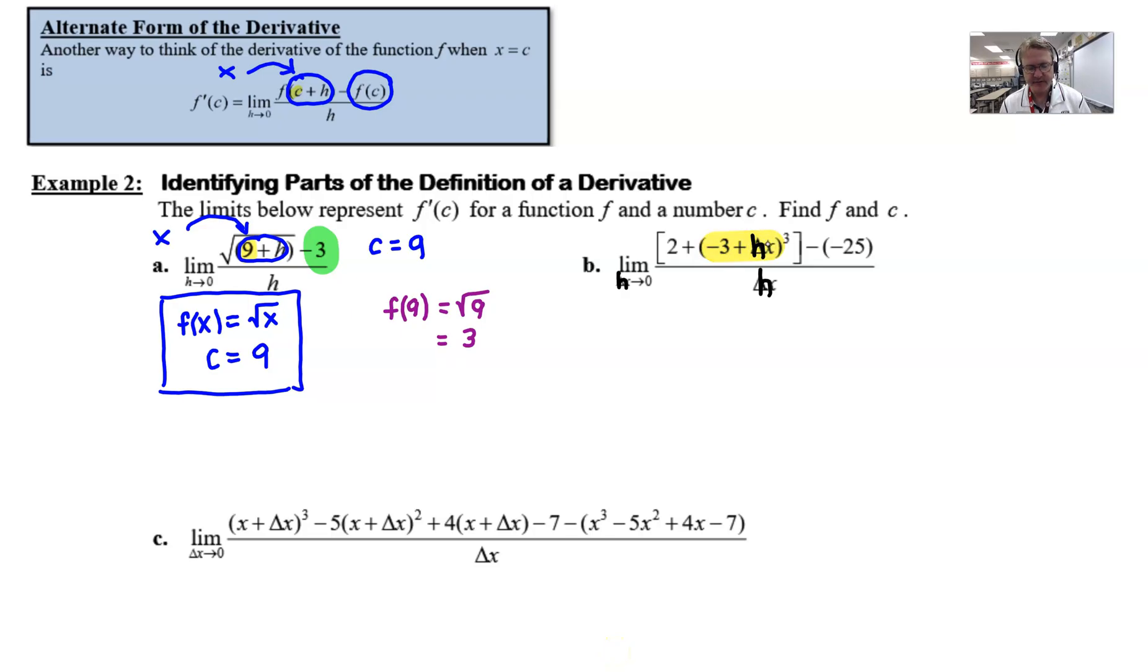The best thing that I can find that looks like a c + h would be this -3 + delta x, or after we changed it, -3 + h. Don't be influenced by the 2+ out in front. It's not part of your c + h. You're looking for very specific parentheses in this case. Or back in the case of part a, we had parentheses around 9 + h. So in this particular case, then we see that the value of c has to be -3, because we have our c plus our h.